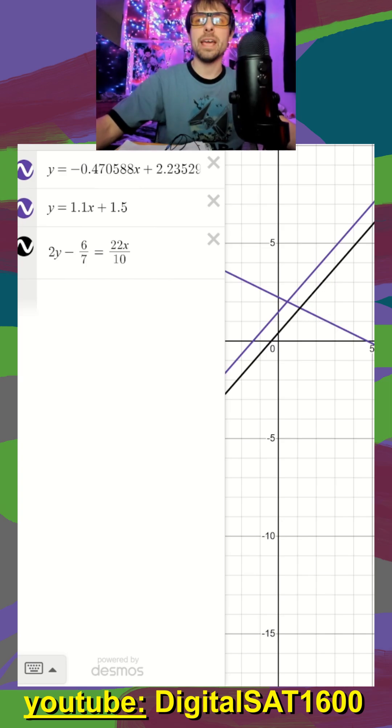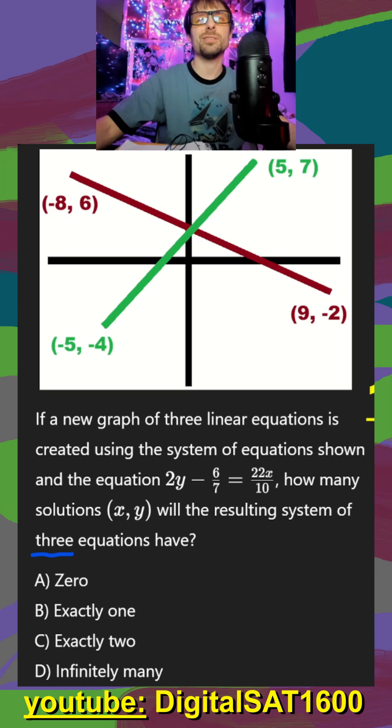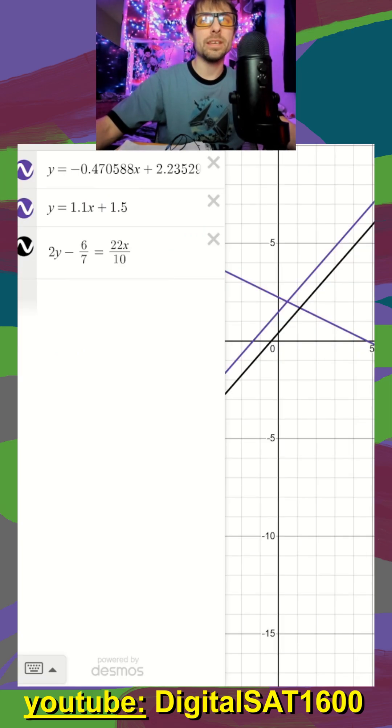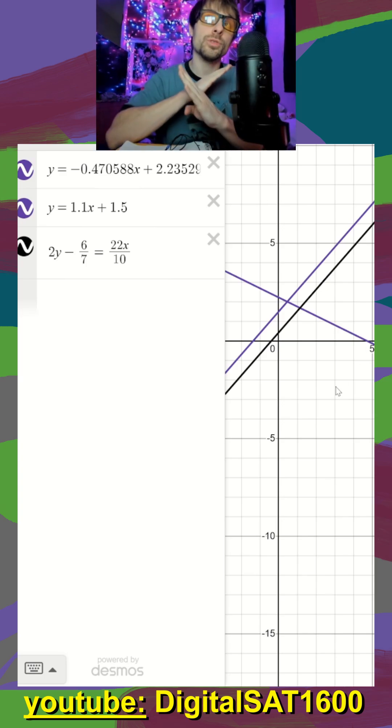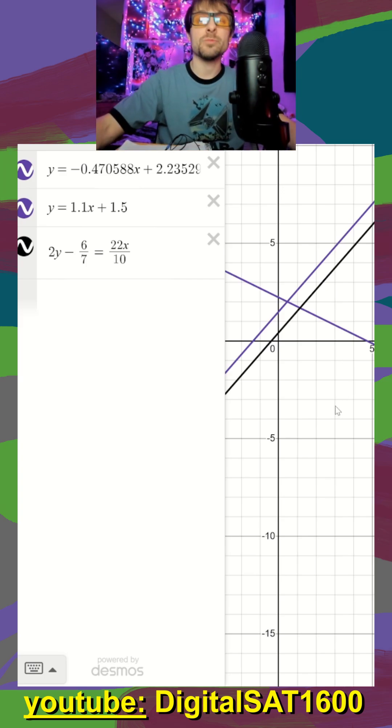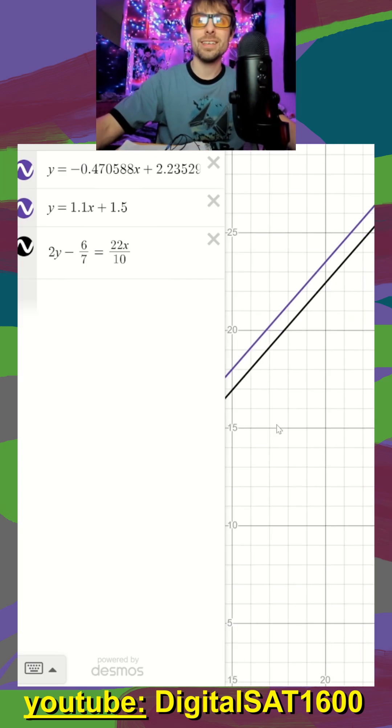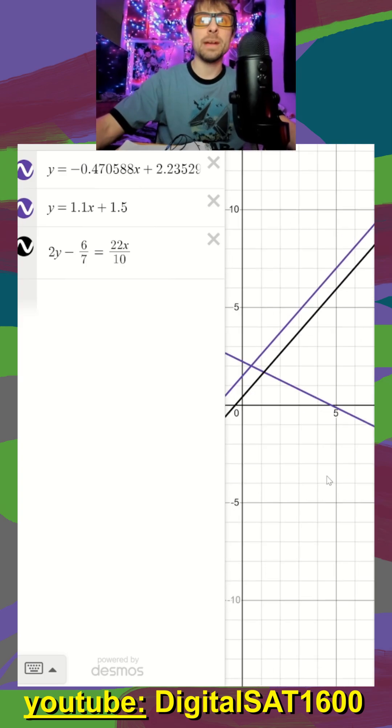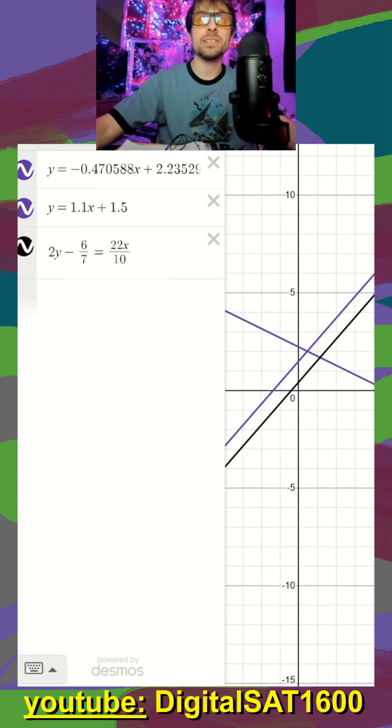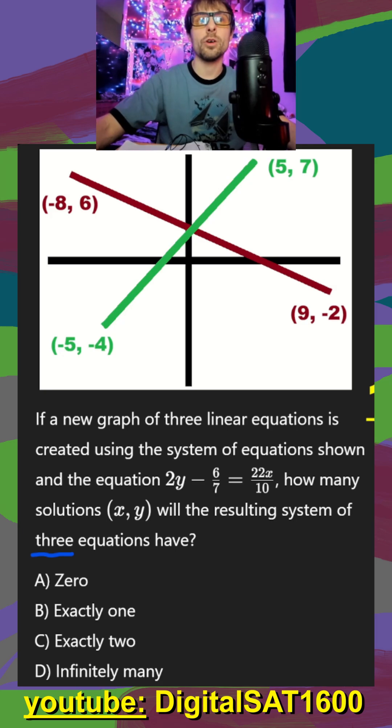So jumping back to my answers here, how many solutions do these three lines have? Well, you might be thinking that it's going to be two here, right? Because we have two intersection points. But a solution when we only have two lines is when those two lines intersect. A solution when we have three lines is when all three lines intersect. You can see that these two lines are parallel, they're never going to intersect, which means my three lines are never going to intersect. So kind of a trick question, there are zero times when all three lines intersect.